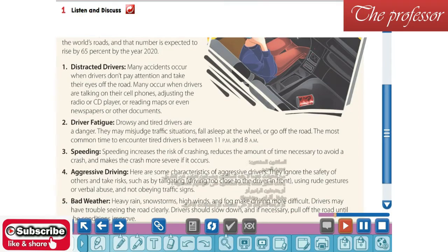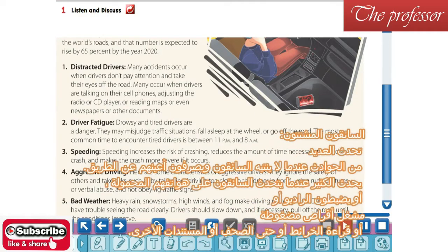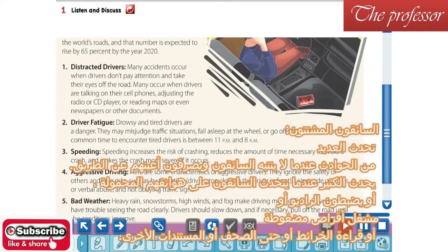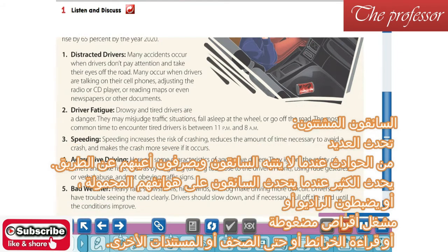1. Distracted Drivers. Many accidents occur when drivers don't pay attention and take their eyes off the road. Many occur when drivers are talking on their cell phones, adjusting the radio or CD player, or reading maps or even newspapers or other documents.